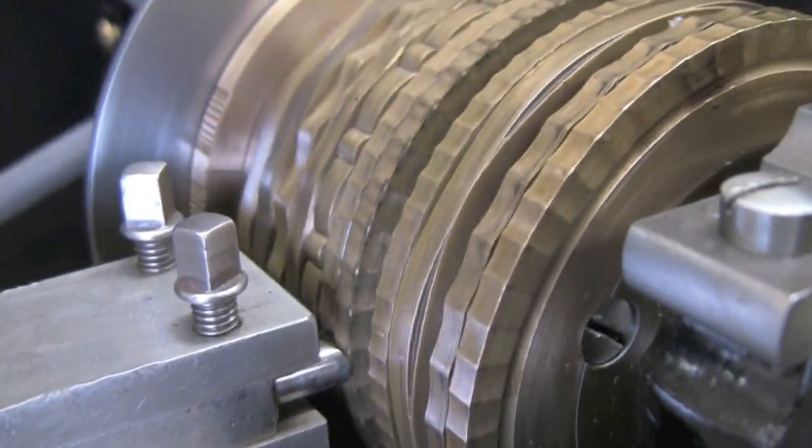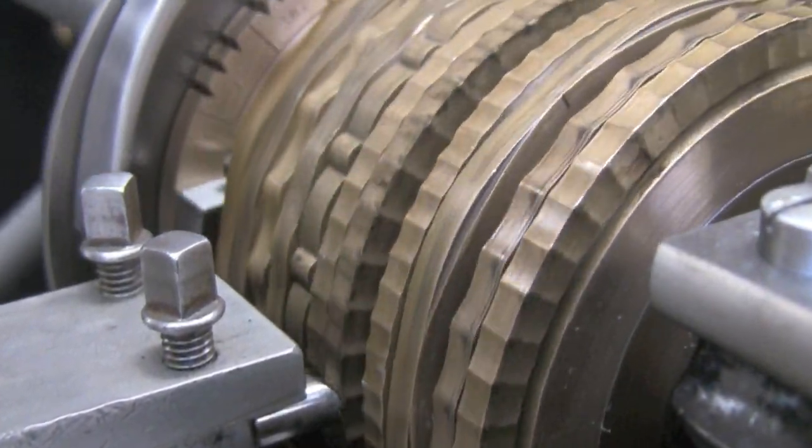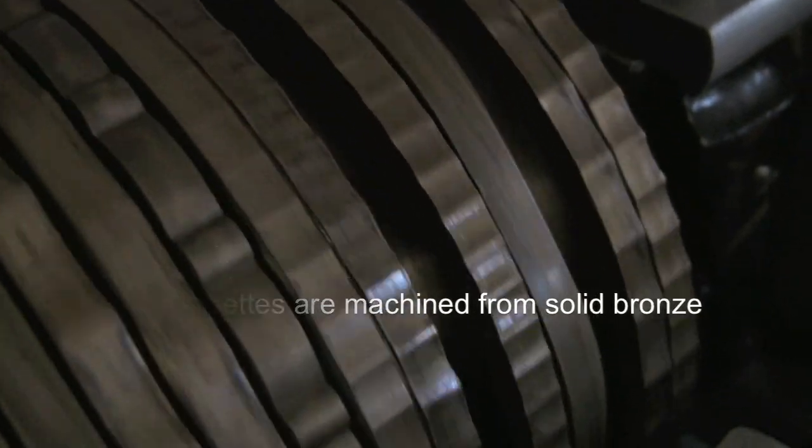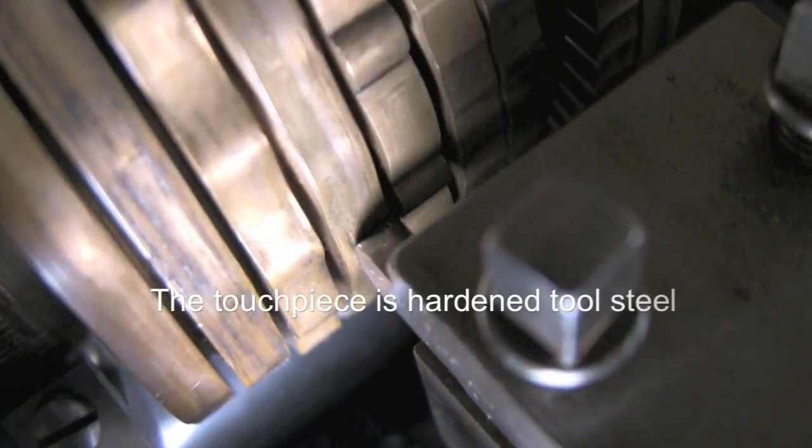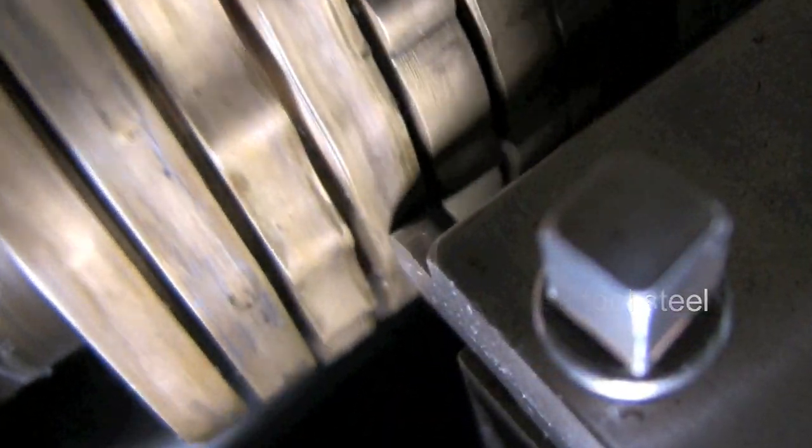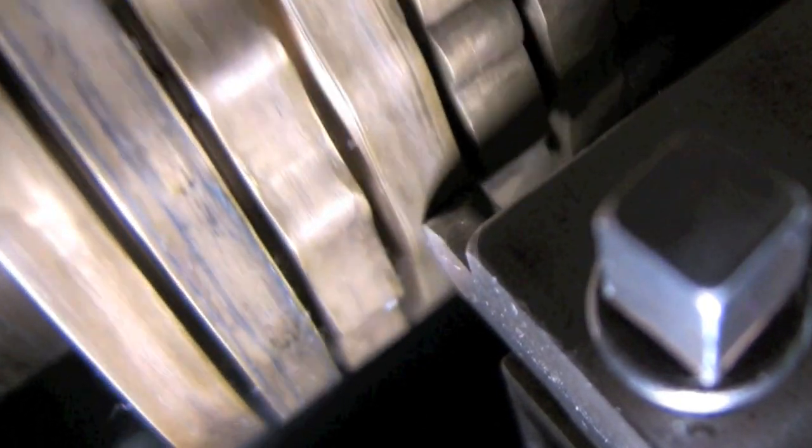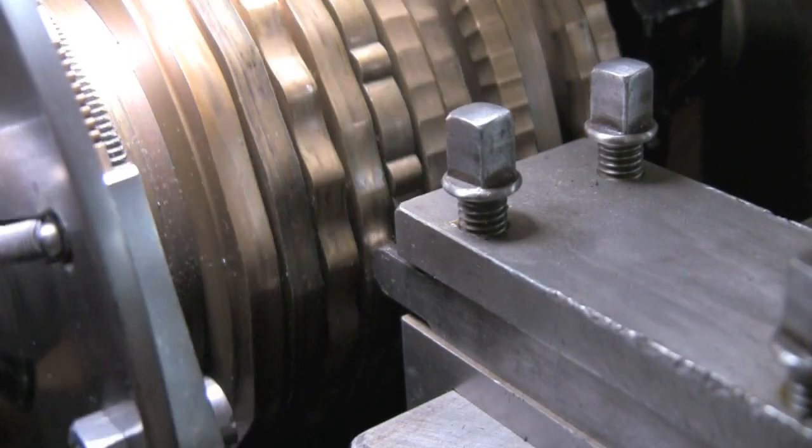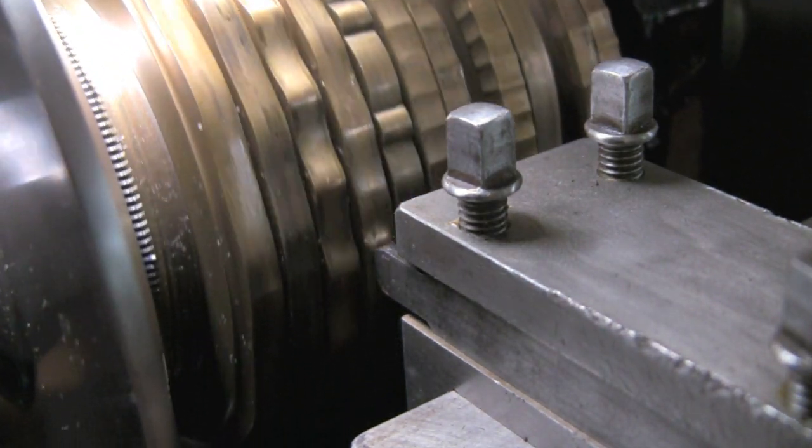The rosettes, those discs with the different patterns on them, are really what help us to create the patterns. There's a touch piece, a metal touch piece, there's different types of them that we use that actually touch the rosette. And the rosette is leaning, one rosette is leaning against that as you're cranking or hand-turning the machine. And that's making the entire head of the machine move back and forth as that touch piece travels around the rosette.